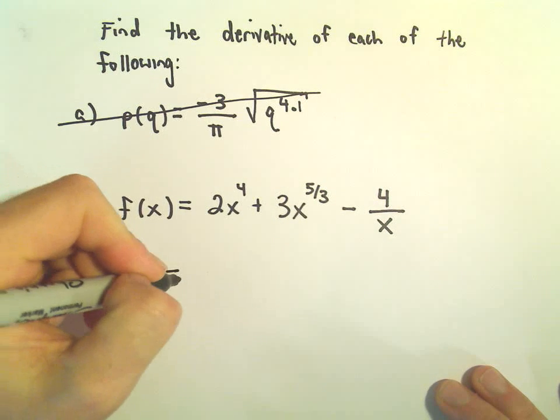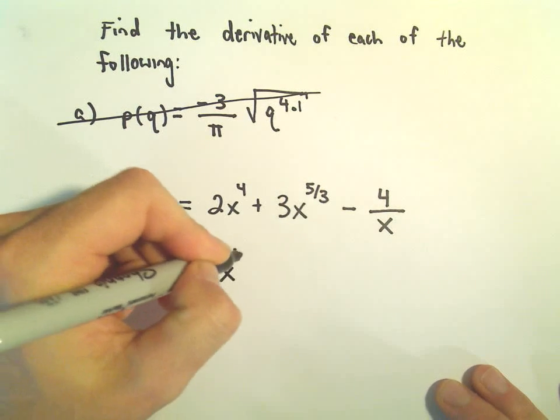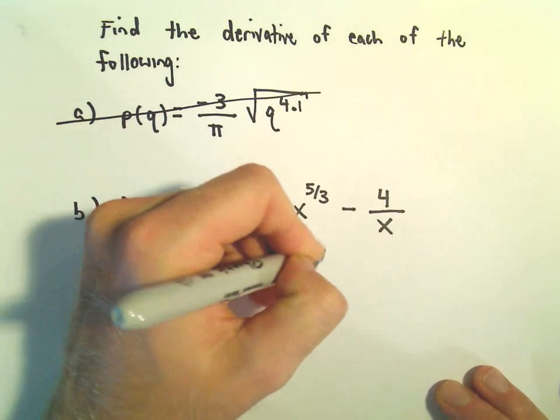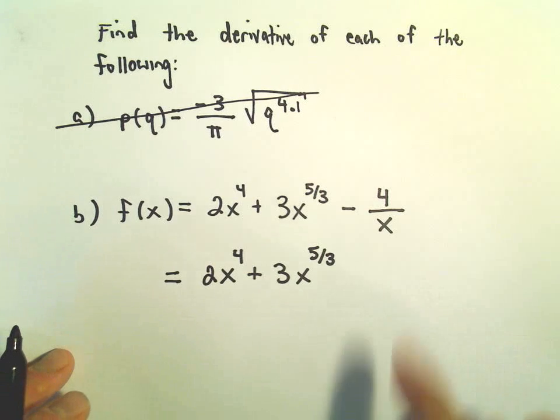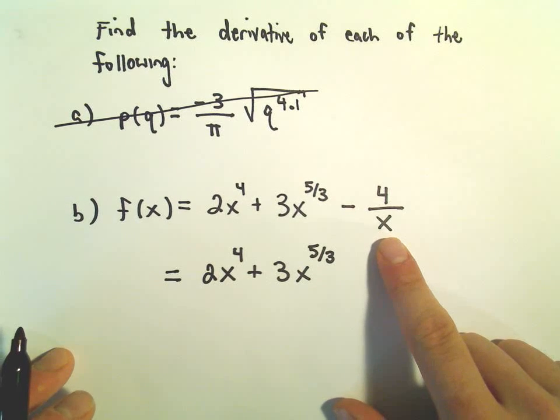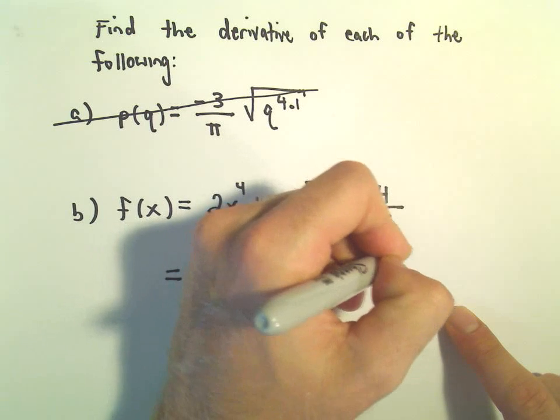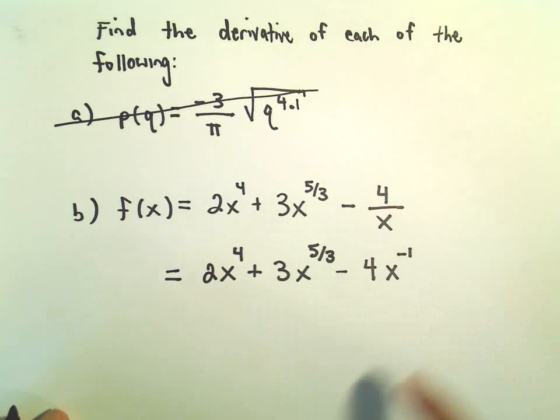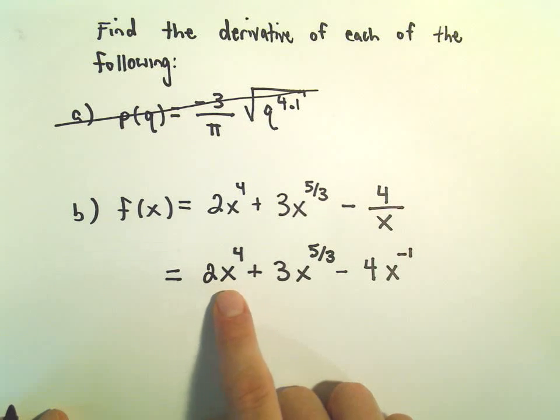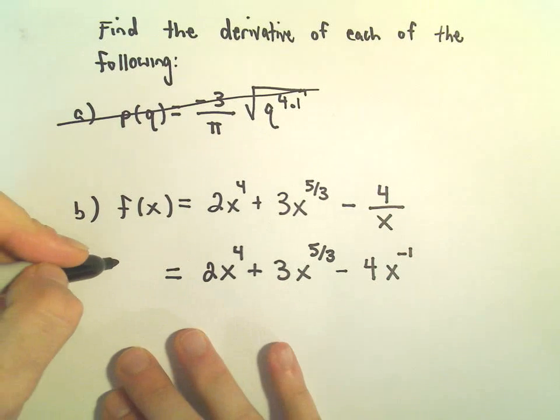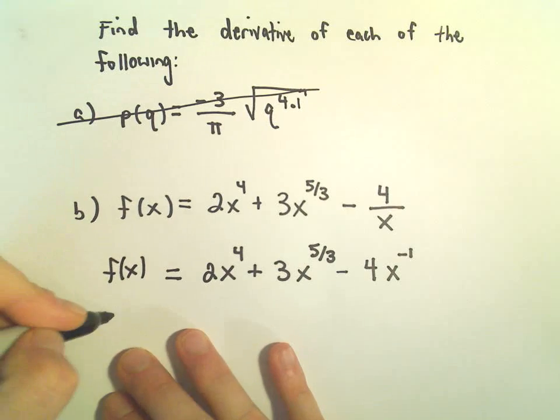The first thing I'm going to do is write this in a way where we can use the power rule. We've got an x to the 1st in the denominator. I'm going to pull that upstairs and make it x to the negative first. So now I see my x is to numbers, x is to numbers, x is to numbers, so I can start using that nice derivative rule.